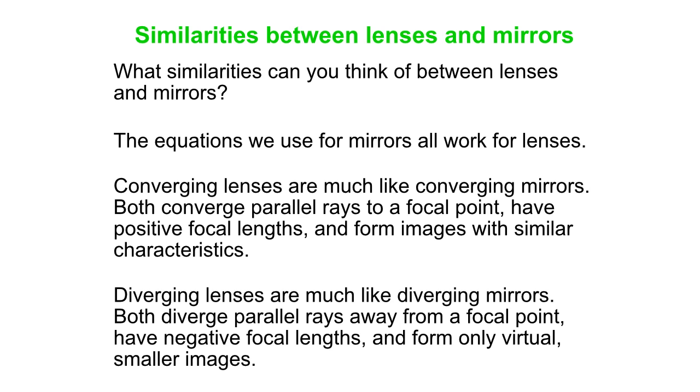Similarly, diverging lenses are much like diverging mirrors. Both diverge parallel rays away from a focal point. They have negative focal lengths and they form only virtual smaller images.